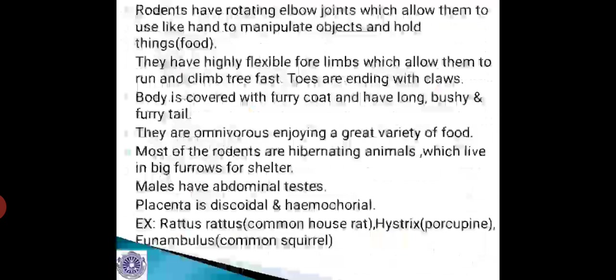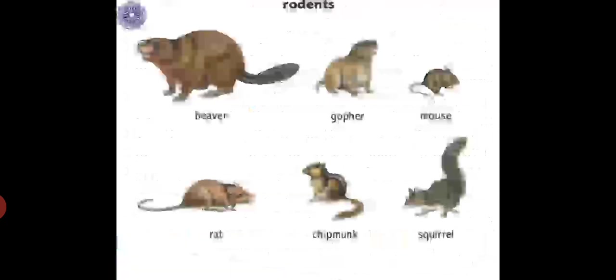Males have abdominal testes, and the placenta is discoidal and haemochorial type. Best examples are Rattus rattus (common house rat), Hystrix (porcupine), and Funambulus (squirrel). In this slide you will see the different varieties of rodent animals like beaver, gopher, mouse, rat, chipmunk and squirrel.